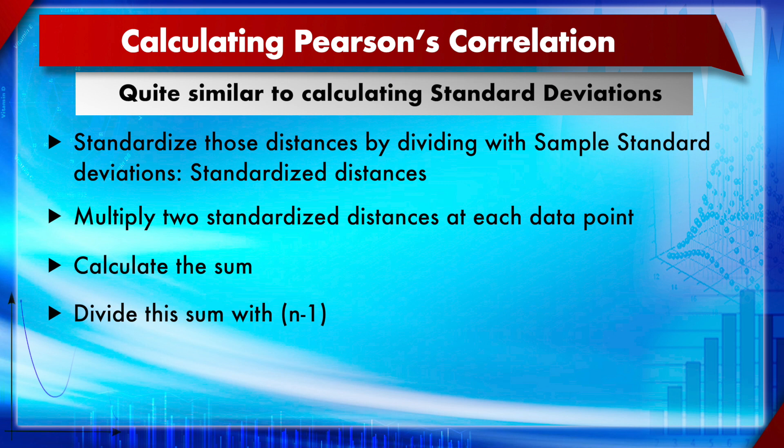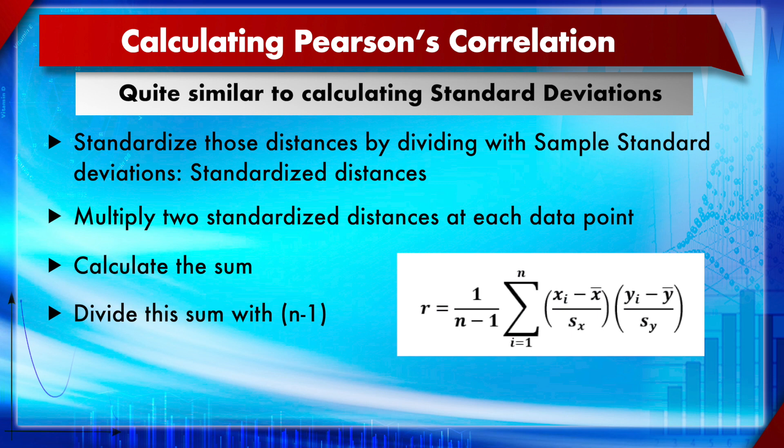The formula for Pearson's correlation coefficient is: r = (1 / (n−1)) × Σ [(xᵢ − x̄) / SD_x] × [(yᵢ − ȳ) / SD_y].